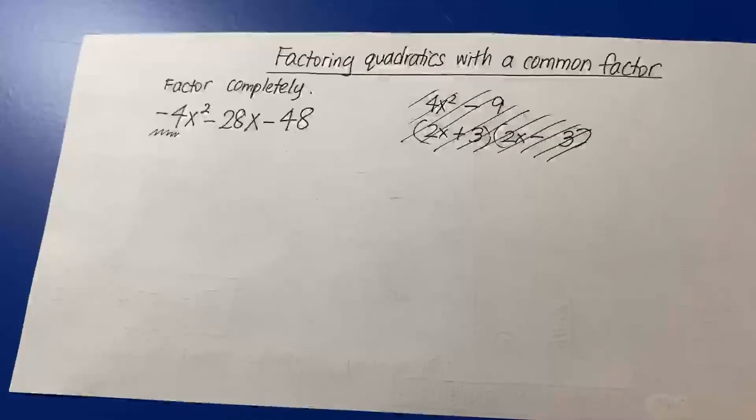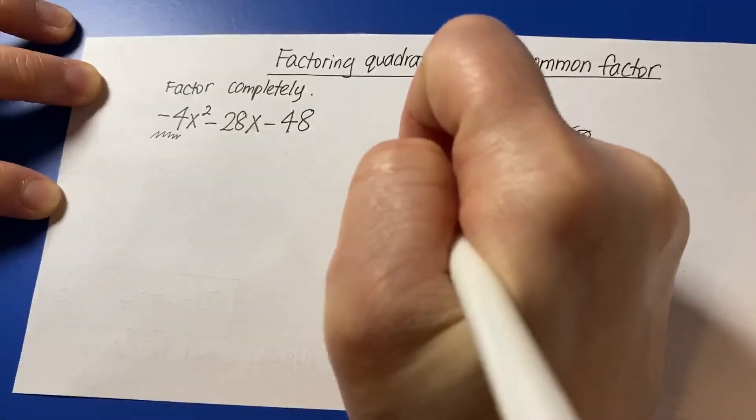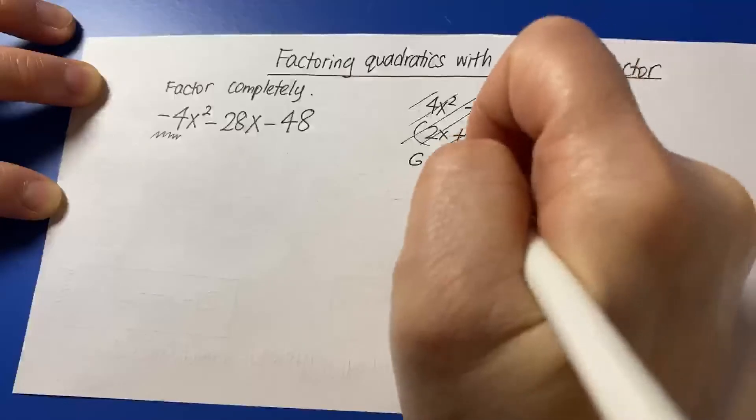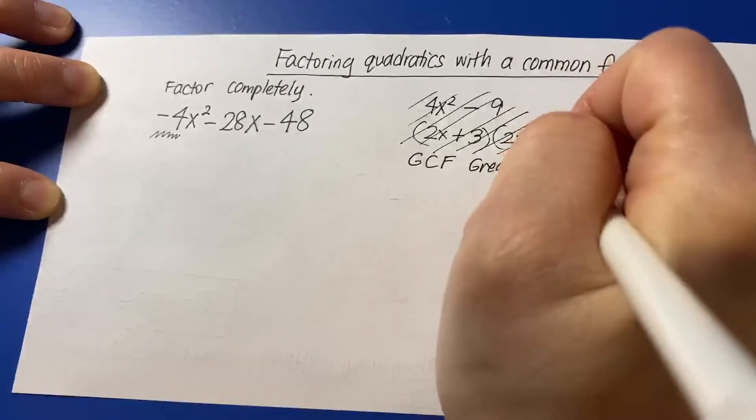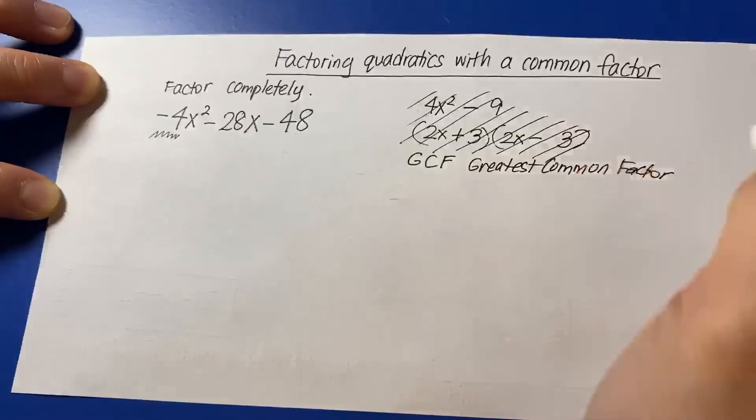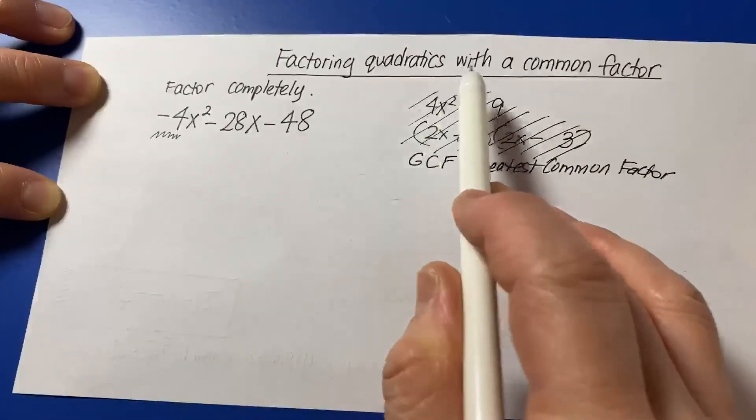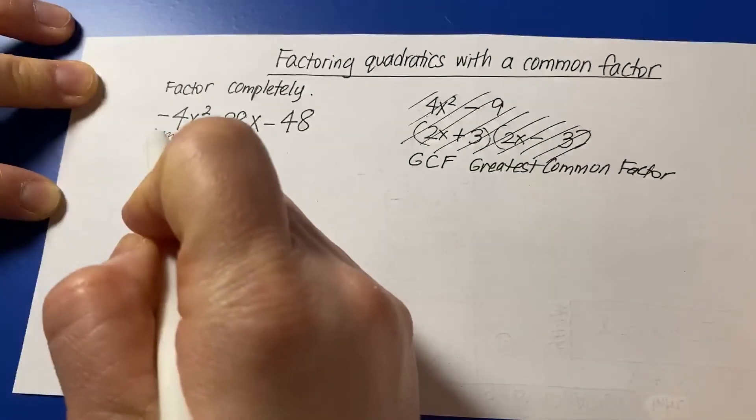So then if it's not x-factor, it's not difference of perfect squares, so our final choice would be GCF. GCF representing greatest common factor, which leads on to the topic for today. So we're factoring quadratics with a common factor, the greatest common factor.